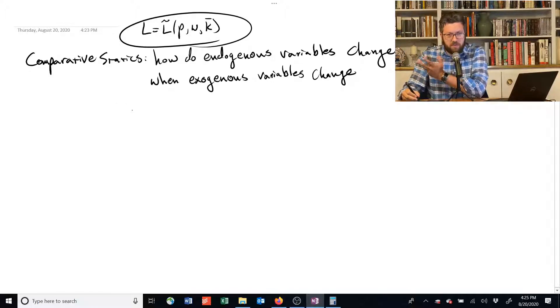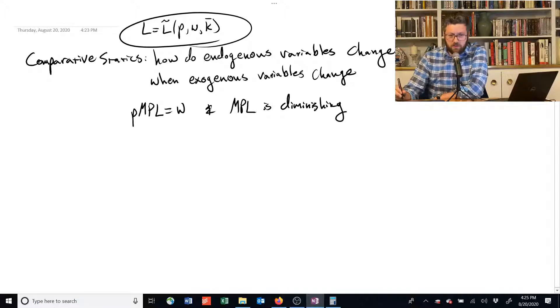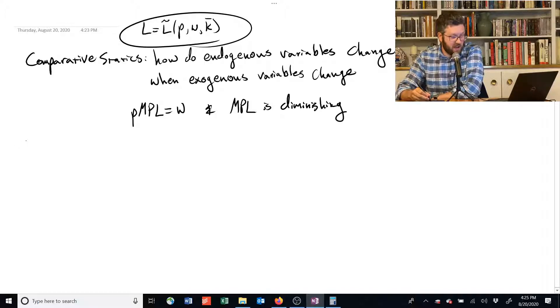If I don't tell you what the function looks like, you can still say that the price times the marginal product of labor is going to be equal to the wage rate. We know that's true. And we can assume that the marginal product of labor is diminishing. We're going to assume that those conditions hold. And it turns out just those two things on their own are enough for us to already do a little bit of comparative statics.